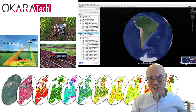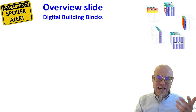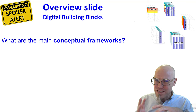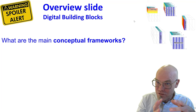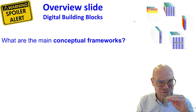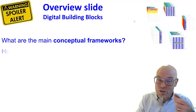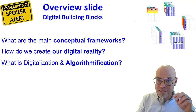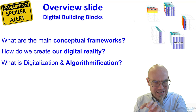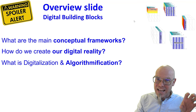That's the core notion of today's lecture. We break down how we create our digital reality into six questions and two main conceptual frameworks. The first step — data and communication — I call the digitalization of reality. The second step — knowledge and algorithms — I call algorithmification.